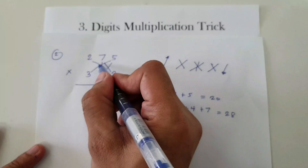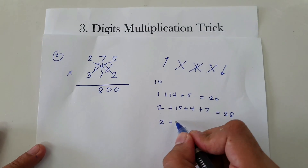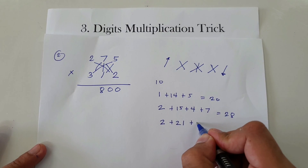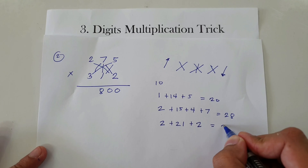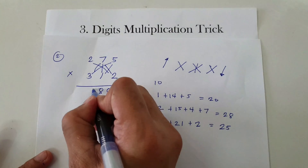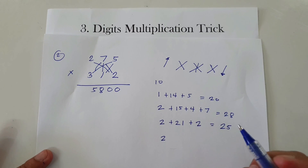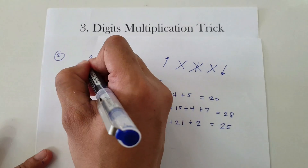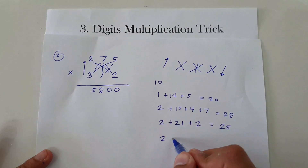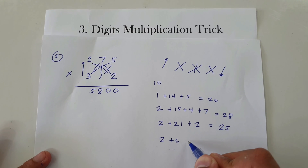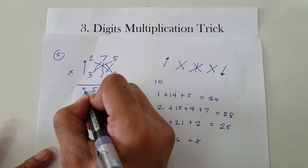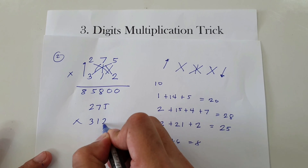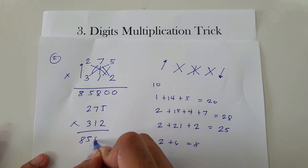Next cross: 7 times 3 is 21, and 2 times 1 is 2. Adding, we have 2 plus 21 plus 2, that's 25. So that is 5, and we carry 2. Then up: 2 times 3 is 6, plus 2 carried, that is 8. So therefore, 275 times 312 is 85,800.